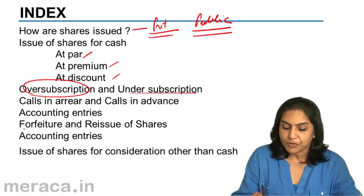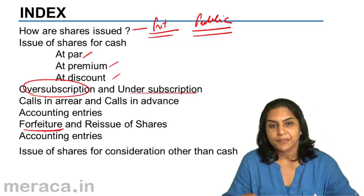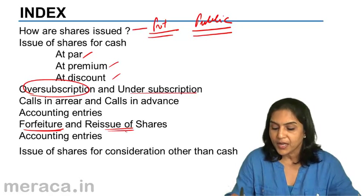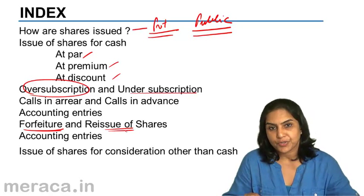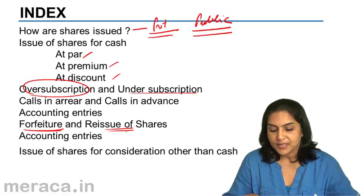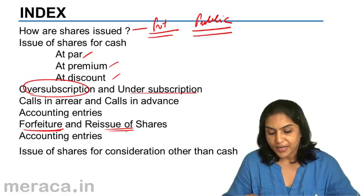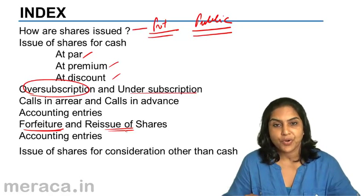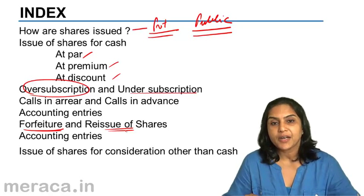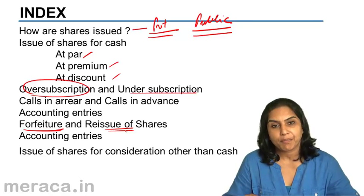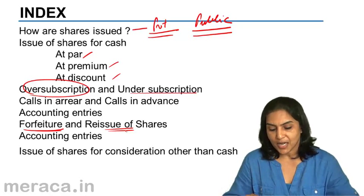Then we move on to the concept of forfeiture of shares. Shares which are forfeited can also be reissued. There are accounting entries, and accounting entries may differ — forfeiture entries and reissue entries may differ depending on whether the shares were issued at par, premium, or discount.